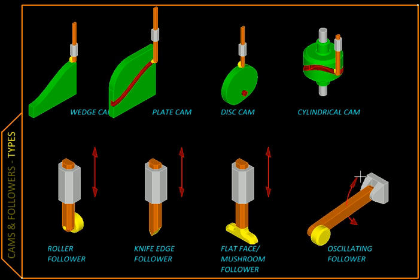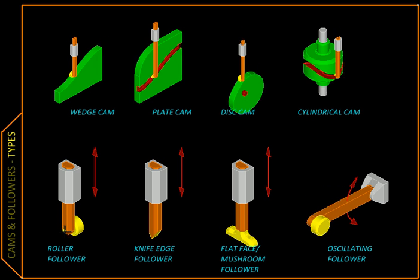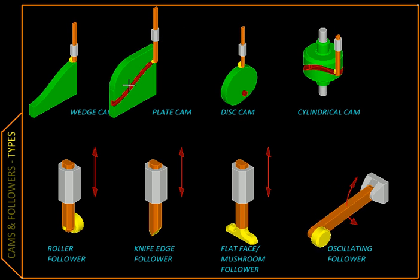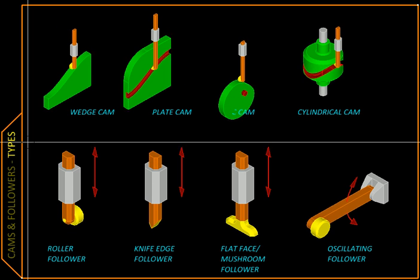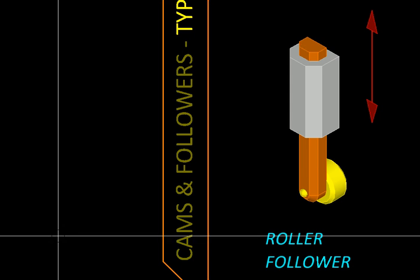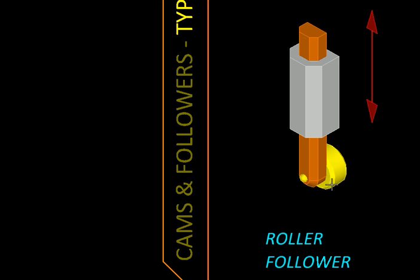Further, the followers can be classified according to the end which is in contact with the cam. For example, here we have a follower at the end of which a roller is attached so that the friction between the follower and the cam can be minimized. So this is called as a roller follower.